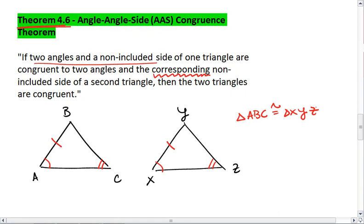Notice the non-included sides need to correspond to one another. If I instead had this picture, because side AB does not correspond to side YZ, they would not be necessarily congruent triangles. So the sides must correspond.